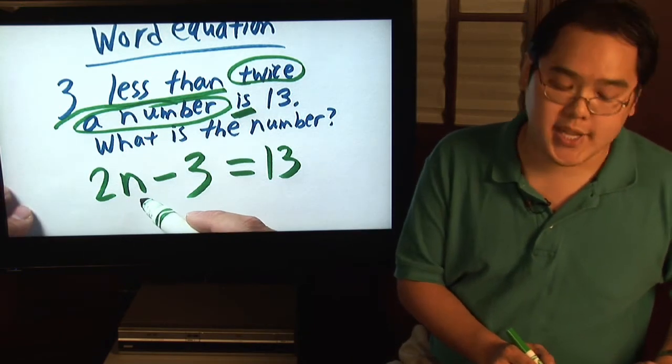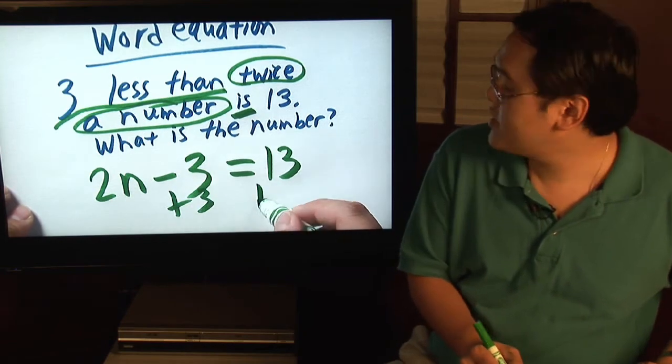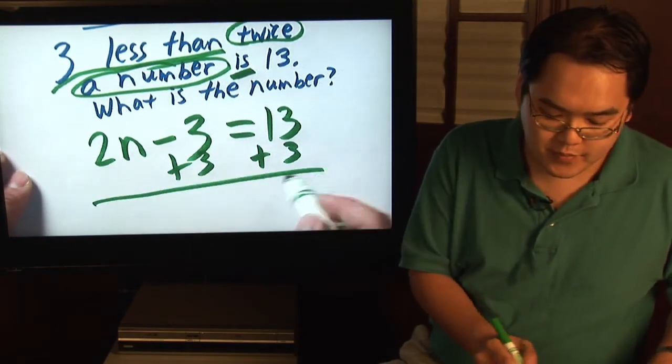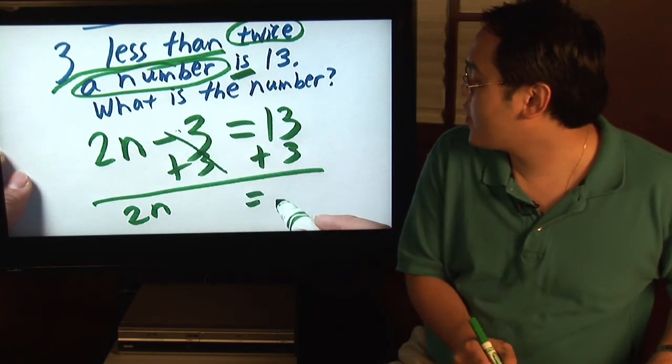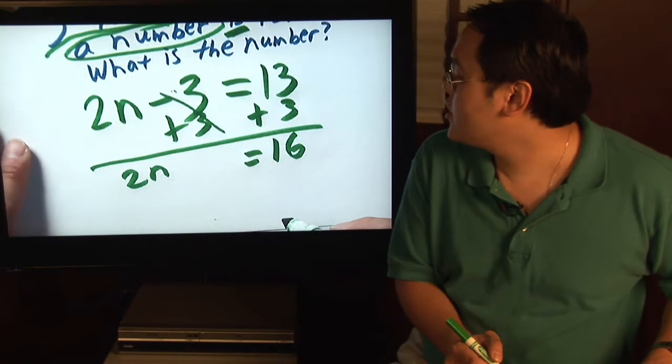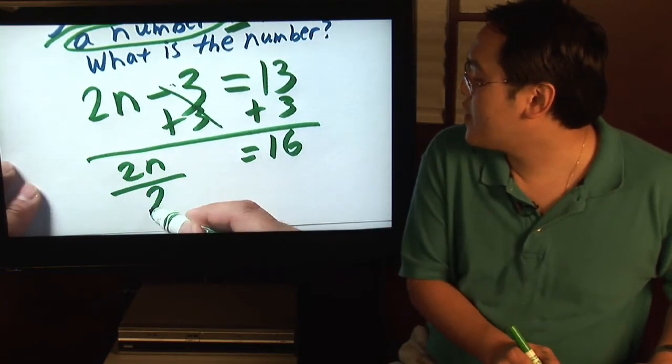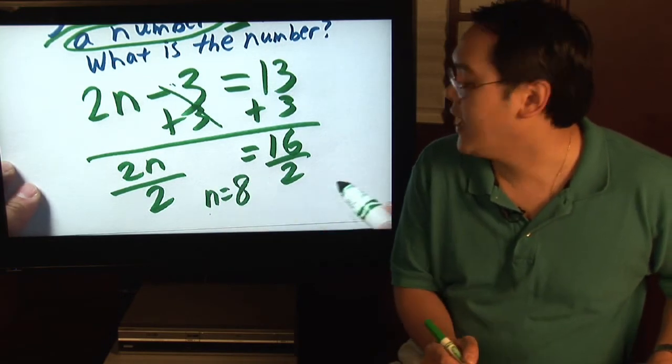So if you want to solve it together, basically you want to get n by itself. You have to get rid of the three. Add three to both sides. So you now have 2n equal to, the negative three and positive three cancel, 13 plus three is 16. And then, to solve for n, divide both sides by two, and you'll have n equal to eight.